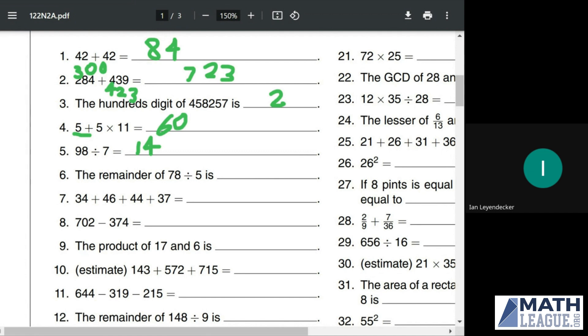Number 6, the remainder of 78 divided by 5 is blank. For 78 divided by 5, for any division by 5, the multiples of 5 end in either 5 or 0. So to find the largest multiple of 5 less than the number we're dividing by, in this case 78, we look for the largest number less than this number that ends in 5 or 0. In this case, that's 75. So the remainder is going to be the difference between 78 and 75, which is 3.